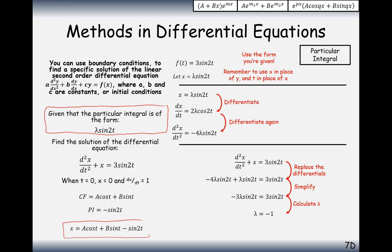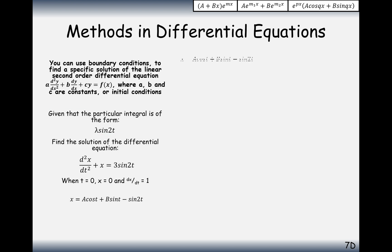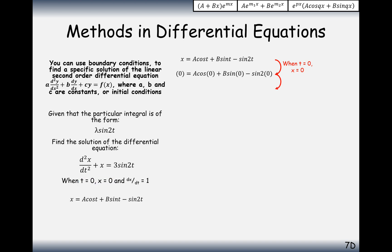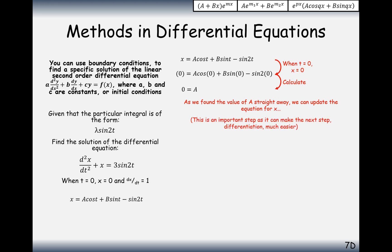Adding the complementary function and particular integral: x equals a·cos(t) plus b·sin(t) minus sine 2t. We can go further and find a and b using the initial conditions. When t equals 0, x equals 0 — remember cos(0) is 1 and sin(0) is 0 — so a equals 0. Since a is 0, we can update the equation and drop the cos(t) term, which makes the next step of differentiation much easier.